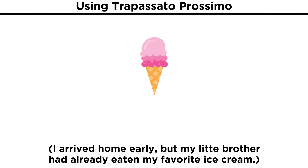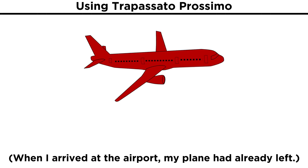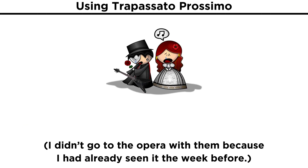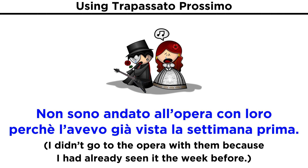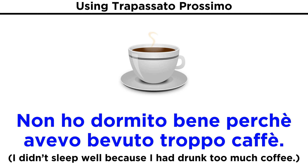I arrived home early, but my little brother had already eaten my favorite ice cream. Sono arrivato a casa presto, ma il mio fratellino aveva già mangiato tutto il mio gelato preferito. Quando sono arrivato all'aeroporto, il mio aereo era già partito. I didn't go to the opera with them because I had already seen it the week before. Non sono andato all'opera con loro perché l'avevo già vista la settimana prima. I didn't sleep well because I had drunk too much coffee. Non ho dormito bene perché avevo bevuto troppo caffè.